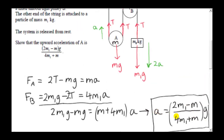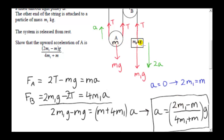As an aside, let's look at this formula for particular cases. When A equals zero, the system doesn't move. For A to be zero, the numerator must be zero, so 2M₁ minus M must equal zero — in other words, twice M₁ must equal M. The system will not accelerate if the mass of the moving pulley is double the hanging mass.